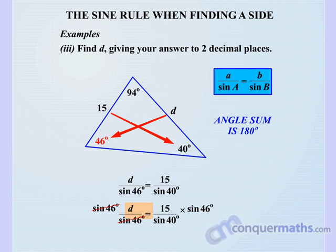So therefore d equals – and using the calculator – 15 divided by sine 40, then multiply that by sine 46. We get 16.79. This time we've rounded it off to two decimal places.